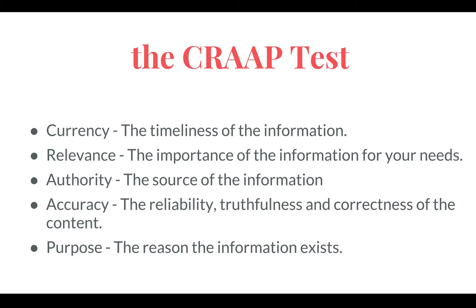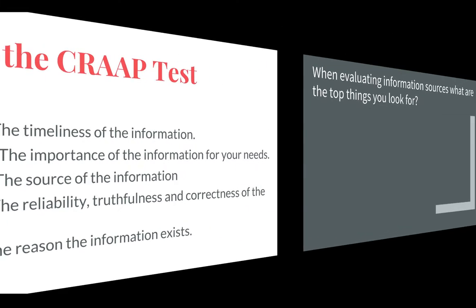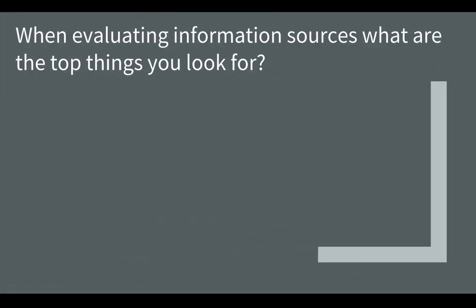Authority is whether the source of the information is someone educated and experienced in that topic. Accuracy is whether the information is reliable, truthful, and correct — and according to whose truth. Finally, Purpose asks why this information exists: is it for entertainment, persuasion, to change your behavior, or is it simply factual?